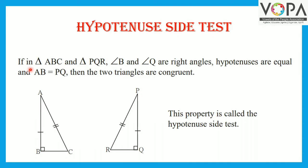If in triangle ABC and triangle PQR, angle B and angle Q are right angles, the hypotenuses are equal, and side AB is equal to side PQ, then the two triangles are congruent. This property is called the Hypotenuse-Side test.